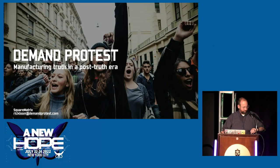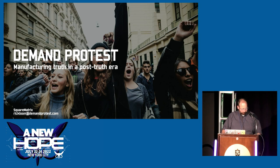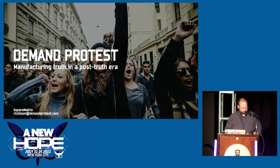Good evening, everybody. Welcome again to another presentation at A New Hope. It is 7 o'clock and 90 degrees outside, so it's better to be in here than out there. I'd like to welcome Square Matrix. He is a hacker and artist from San Francisco, and his talk today is going to look at a selection of online hoaxes and propaganda and some of the tools and tricks that were used to make them happen. We're also going to be looking in particular into some recent history, so please help me welcome Square Matrix.